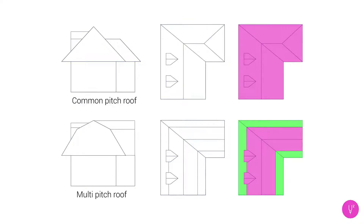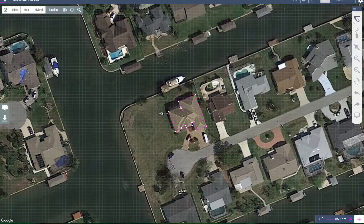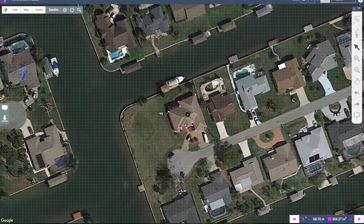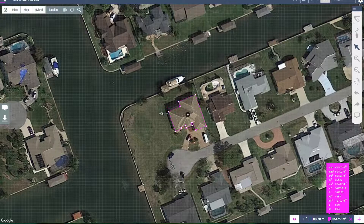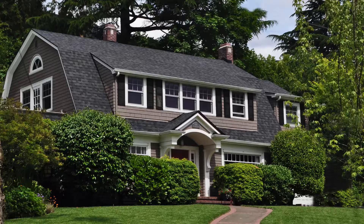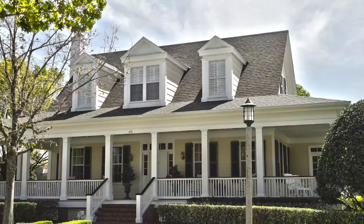Regardless of complexity — multiple ridge lines, hips, valleys, etc. — if the roof has a single pitch or incline throughout, you can simply draw the perimeter of the entire roof and collect the area results from the bottom right corner. If the roof has multiple pitches, you'll need to draw these separately.